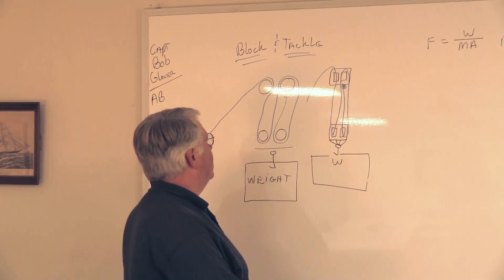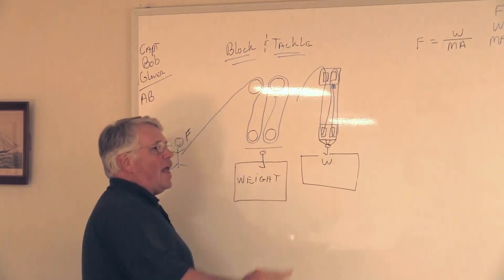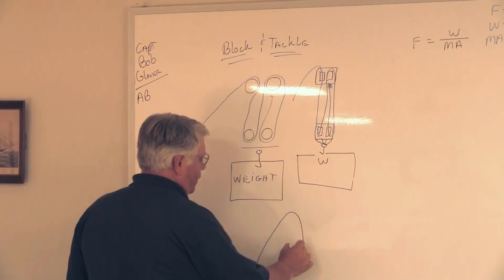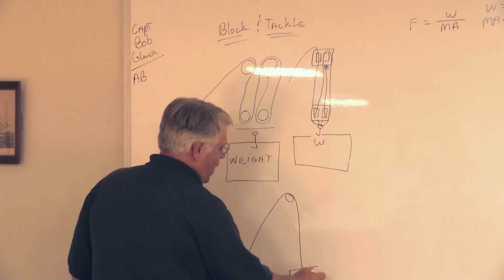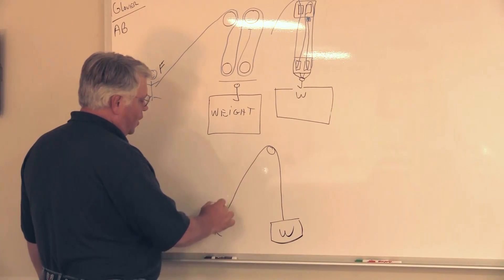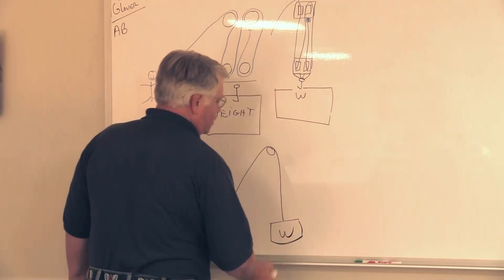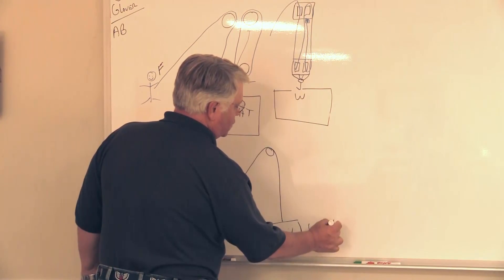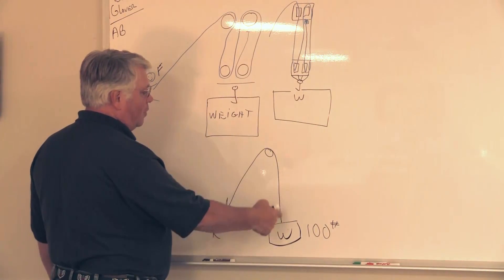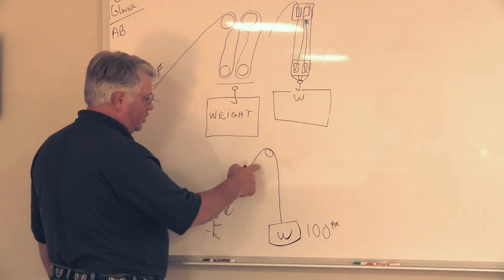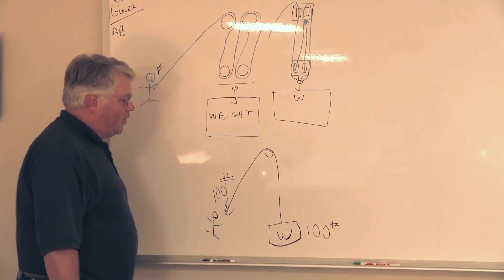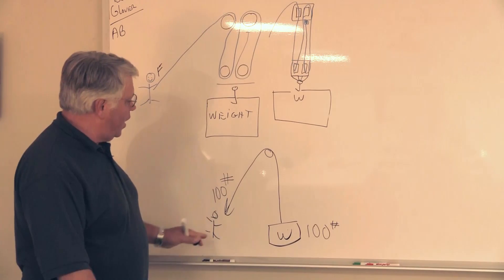If we did not have mechanical advantage, this is what would happen. In a simple situation where I tried to lift a certain amount of weight, if it's 100 pounds and I don't have any kind of mechanical advantage - all I'm doing is redirecting my pulling force - then I'm going to have to pull at 100 pounds in order to pick up that weight.